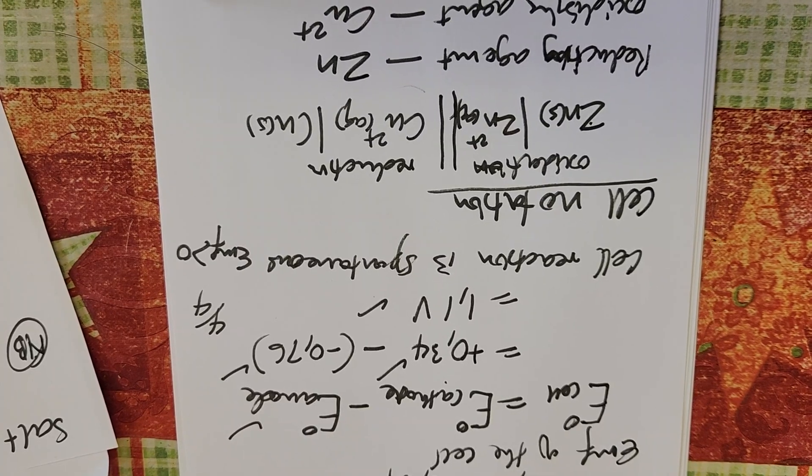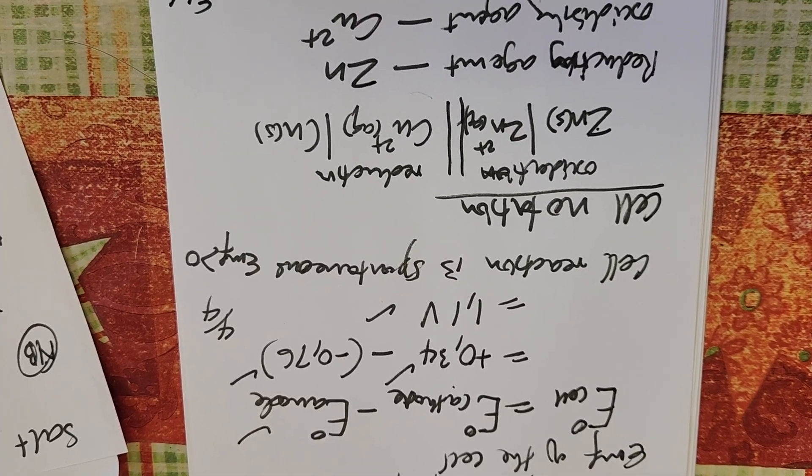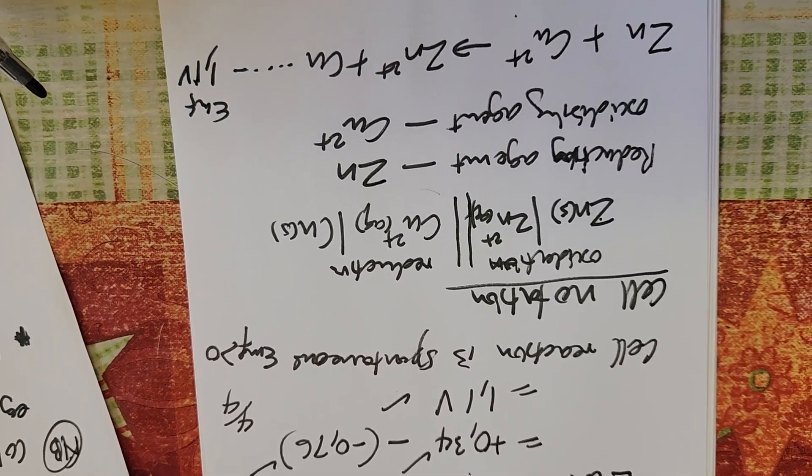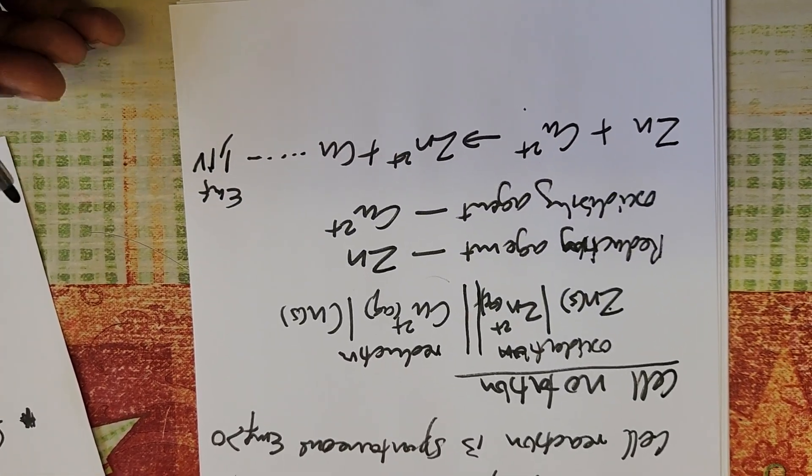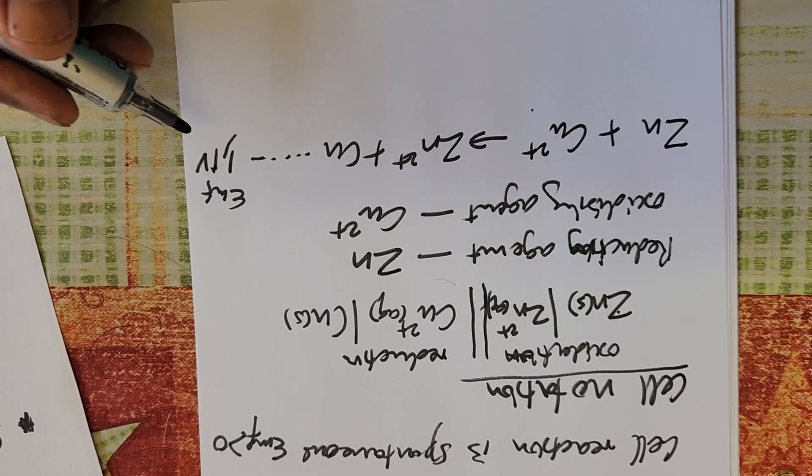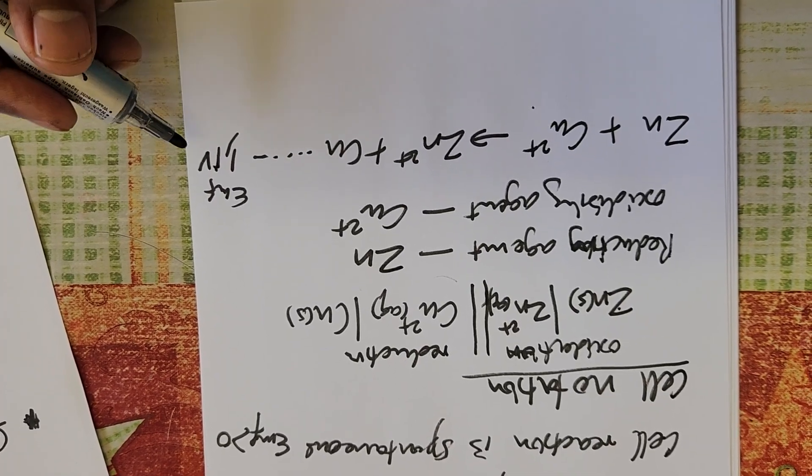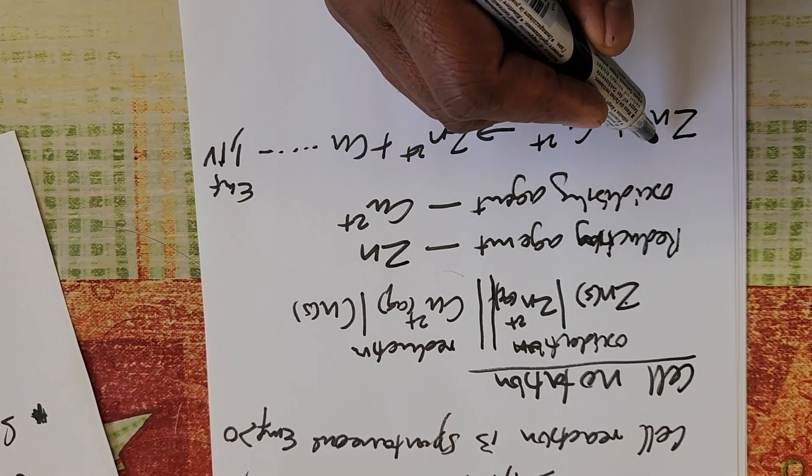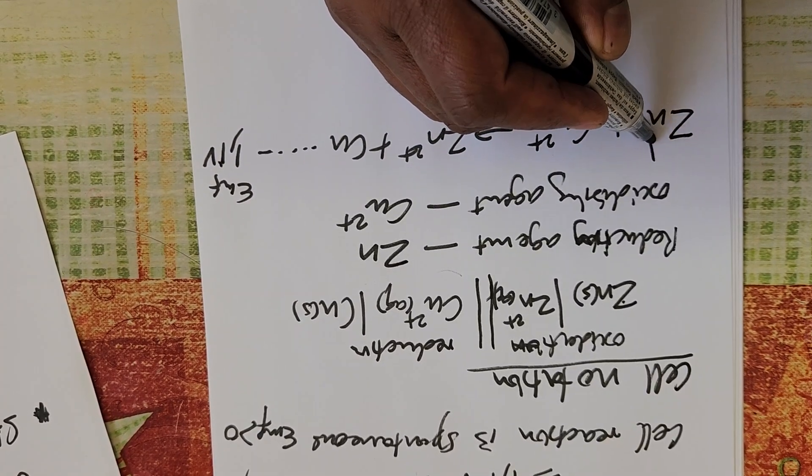The EMF when we start is 1.1 volt. As soon as we connect the voltmeter, the EMF will reach 1.1 volt. Now as the cell is in operation, remember in a normal reaction, the mass of zinc will decrease.